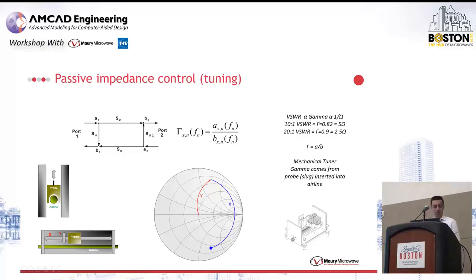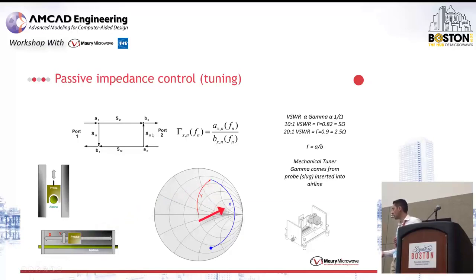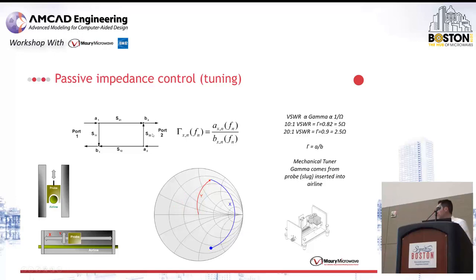There's a vertical probe that you can move. There's an airline here and a mechanical probe — you can move the probe up and down and along the x direction. Moving the probe along the x direction gives you one type of movement on the Smith chart; changing the probe in the y direction gives a different type of movement on the Smith chart. Basically the probe creates a reflection, and gamma is the ratio of the B wave coming out of the device under test to the A wave reflected from the tuner.